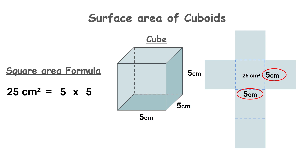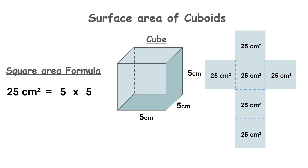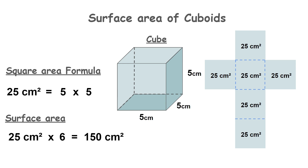5 centimeters multiplied by 5 centimeters equals 25 centimeters squared. And since 25 centimeters squared is the area of one of the squares that make up our cube, that means each of the squares is also 25 centimeters squared. Surface area is the total area of each of the sides combined. Since each of the 6 squares has the area 25 centimeters squared, we multiply by 6 to get the total surface area of the cube, which is 150 centimeters squared.